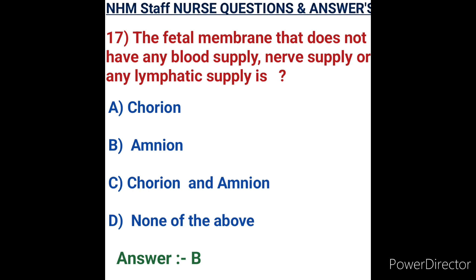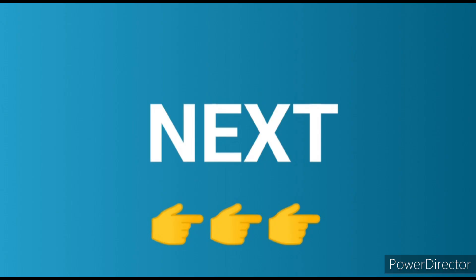Question number seventeen: the fetal membrane that does not have any blood supply or lymphatic supply is. Options: A) chorion, B) amnion, C) chorion and amnion, D) none of the above. The chorion is the double-layered membrane surrounding the embryo; it is the outermost layer. The amnion is the innermost membrane enclosing the embryo of mammals. Option B, amnion, is the correct answer as it is the innermost membrane without blood or lymphatic supply.